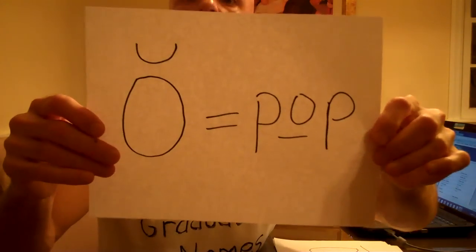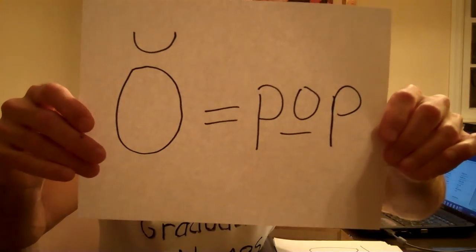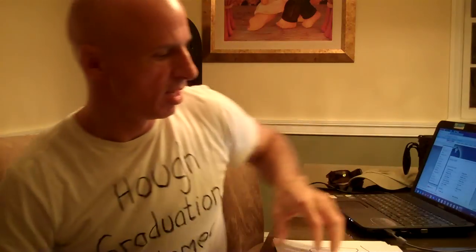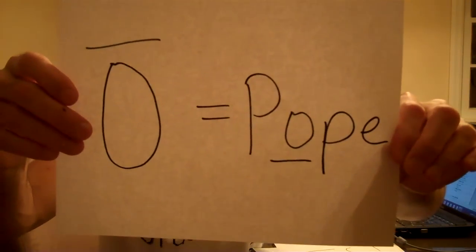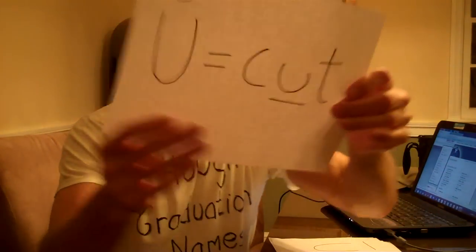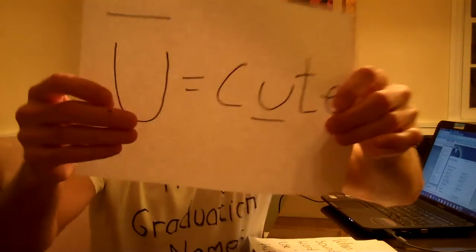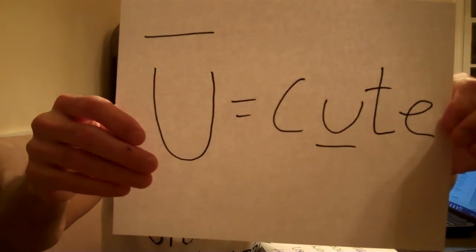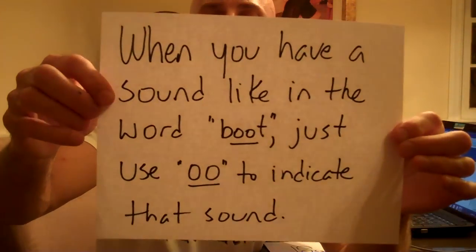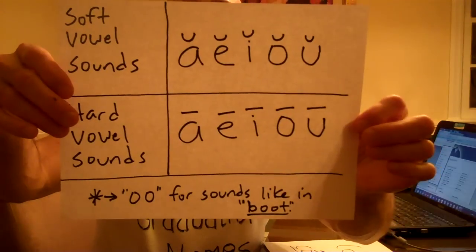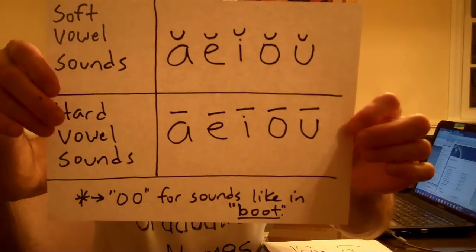Hopefully you've seen a pattern — all I do is add an E on the end of the word to create the hard sound. The soft sound of O, as in 'pop,' is an 'ah' sound. Then you have the hard sound of O with the straight line across, as in 'pole.' Soft sound for U, as in 'cut.' Hard sound for U, as in 'cute.' And when you have the sound like the U in 'boot,' just do the double O to indicate that. Recap: soft sounds with the horseshoe above it, hard sounds with the line across it, and the 'ooh' sound with just the double O.